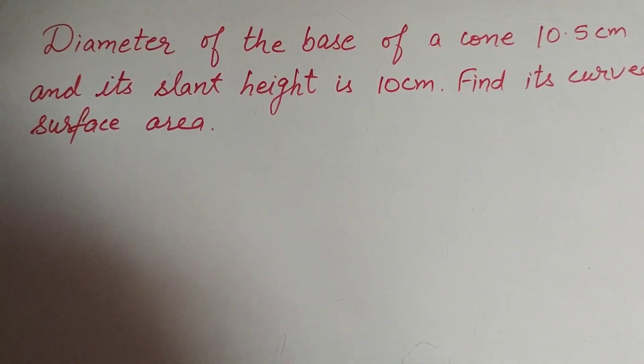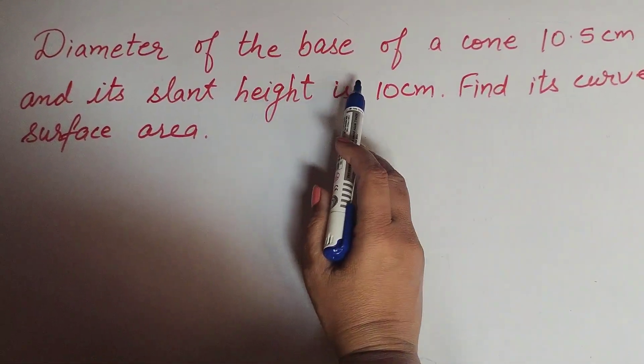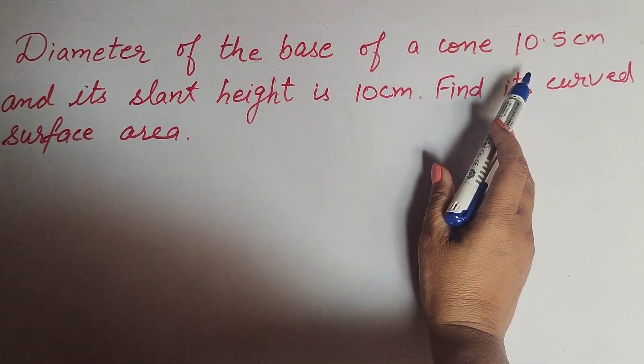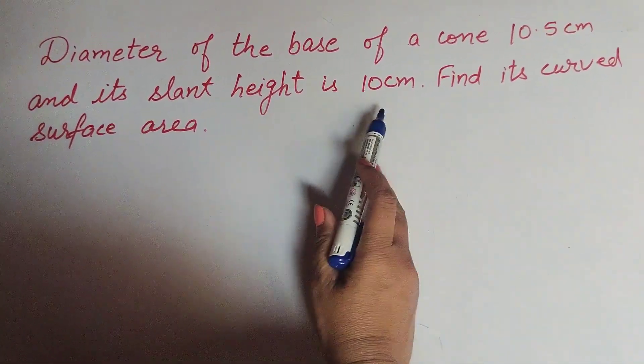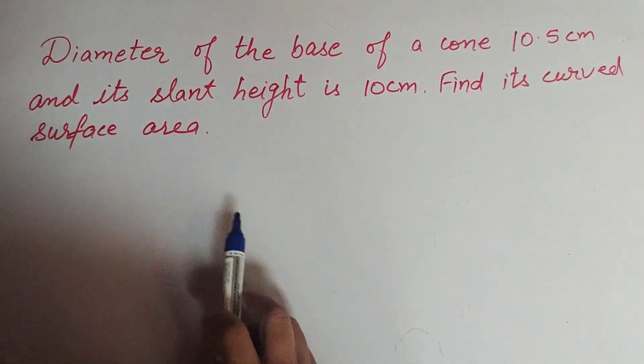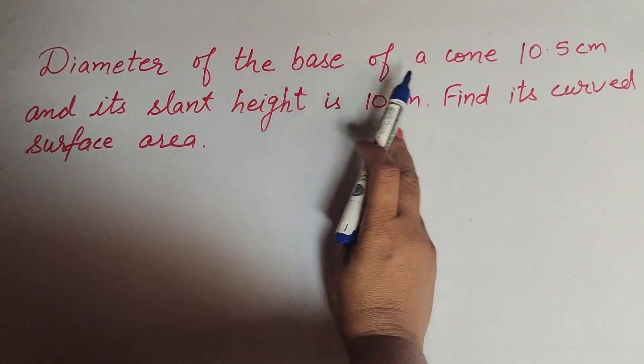Hello friends, welcome to my channel. In this video, we discuss: the diameter of the base of a cone is 10.5 centimeters and its slant height is 10 centimeters. Find its curved surface area. In this question, the given information is the diameter and height.